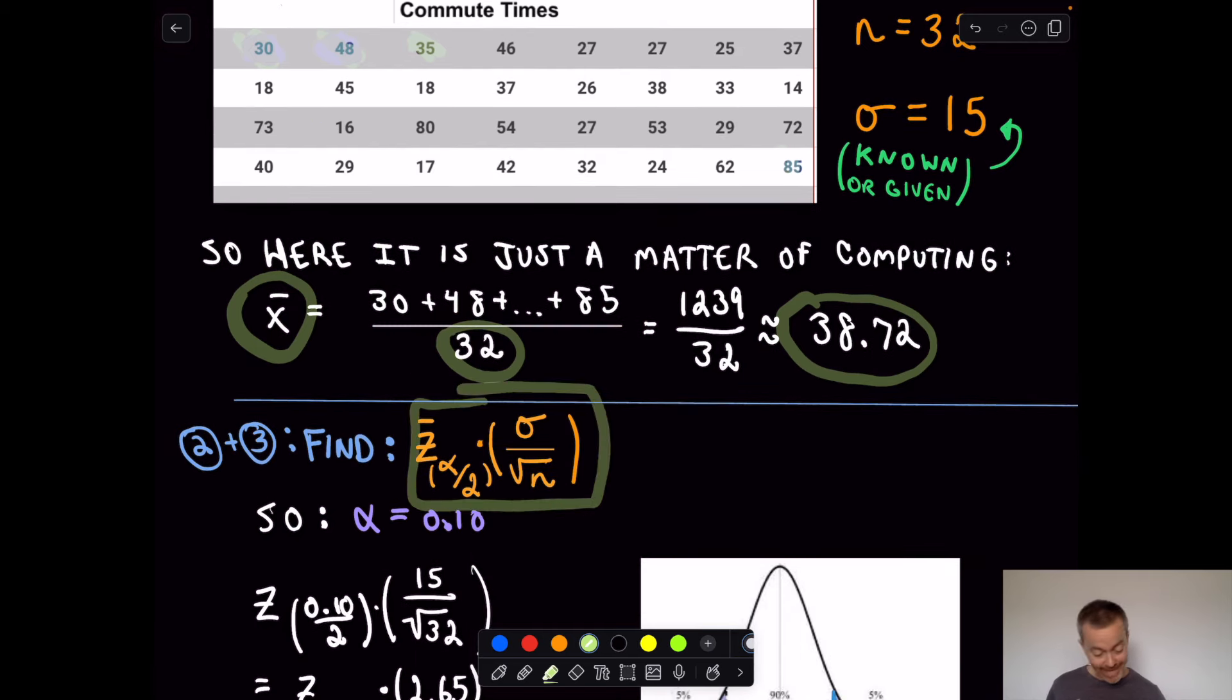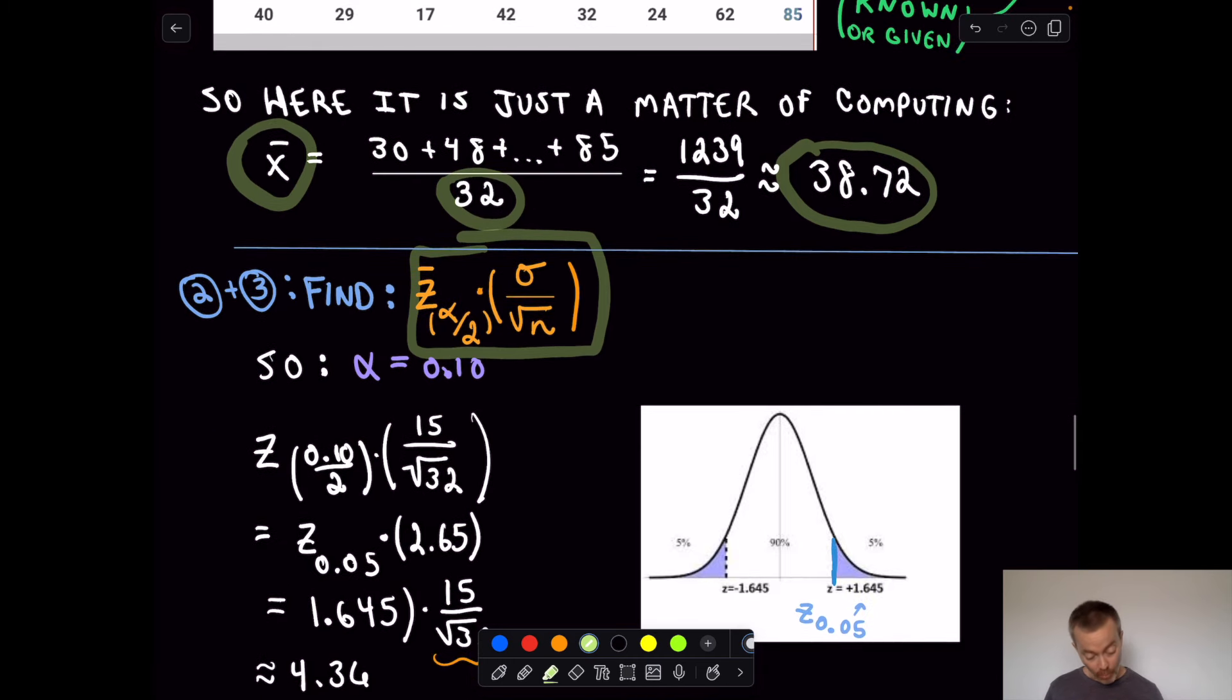So far, so good. Now I need to compute this, the second term. Well, sigma was given, right? We just said that sigma was equal to 15. That's our standard deviation. We know that n was equal to 32. Let's not forget the square root. So I know the second factor. There's not much to do there. It's just dropping in the values that we had. And again, now to look up, we just have to look up the z value from the table.